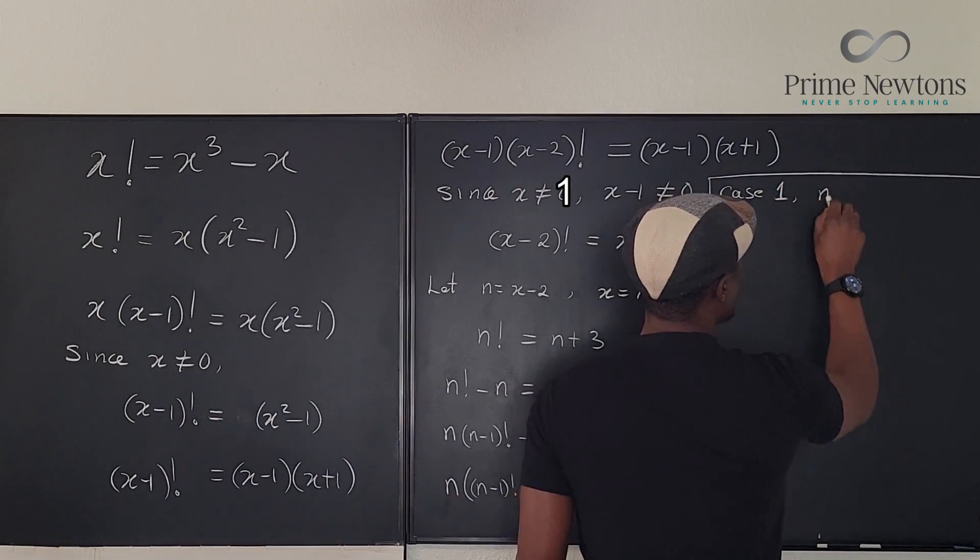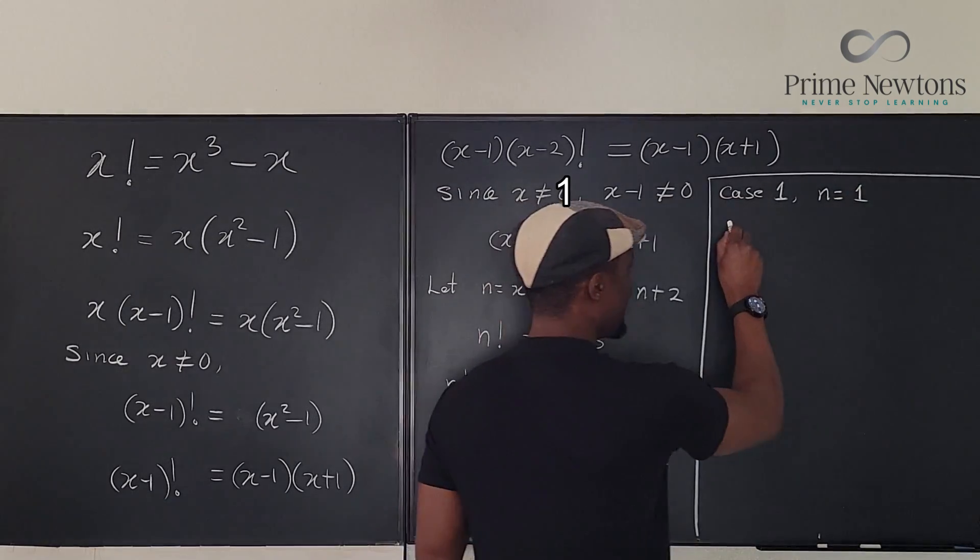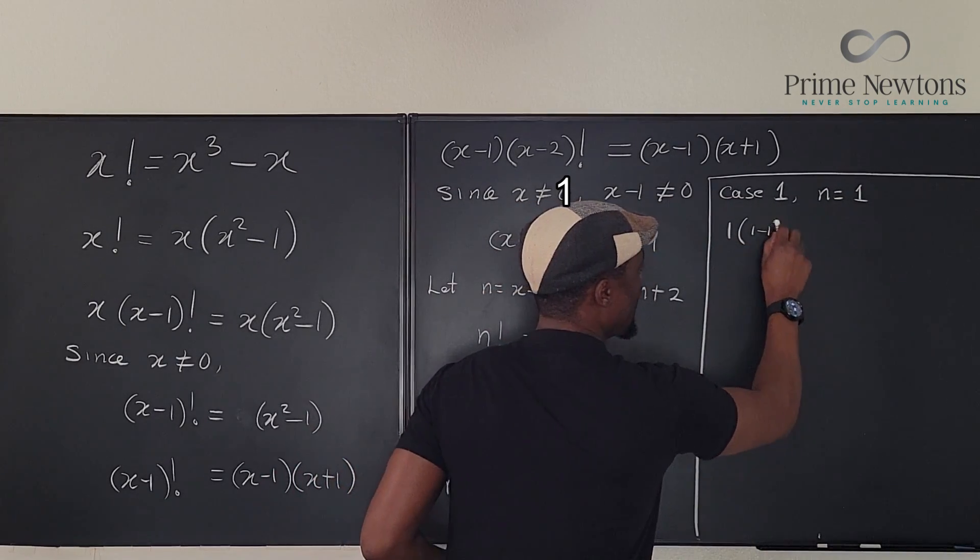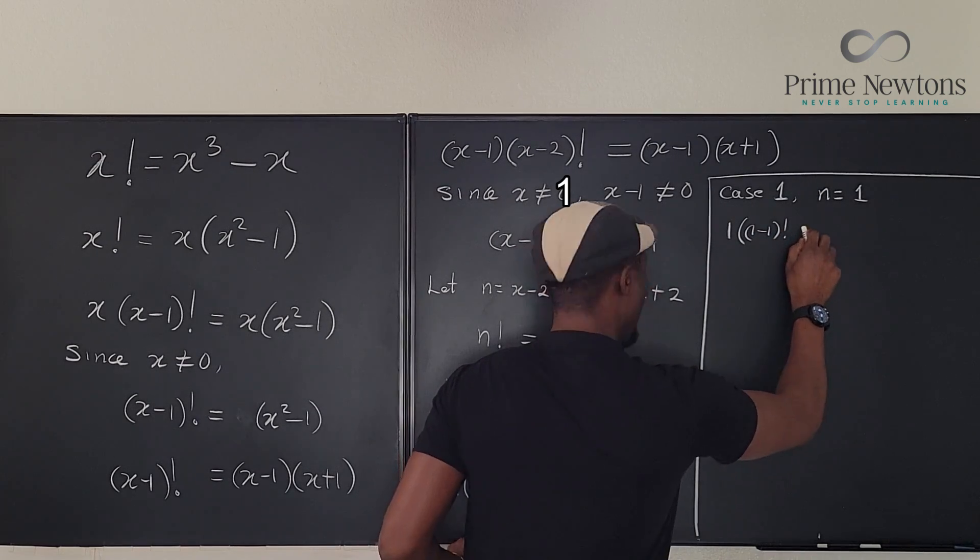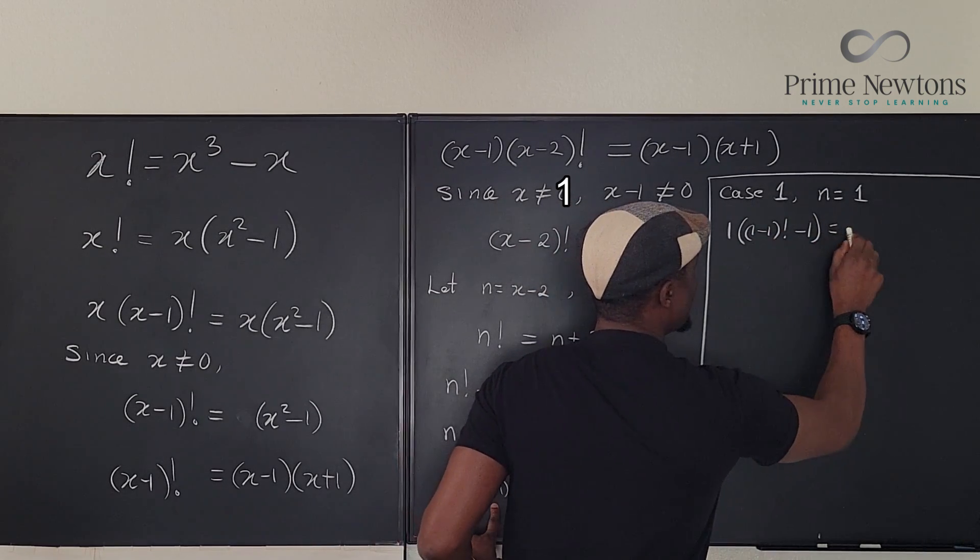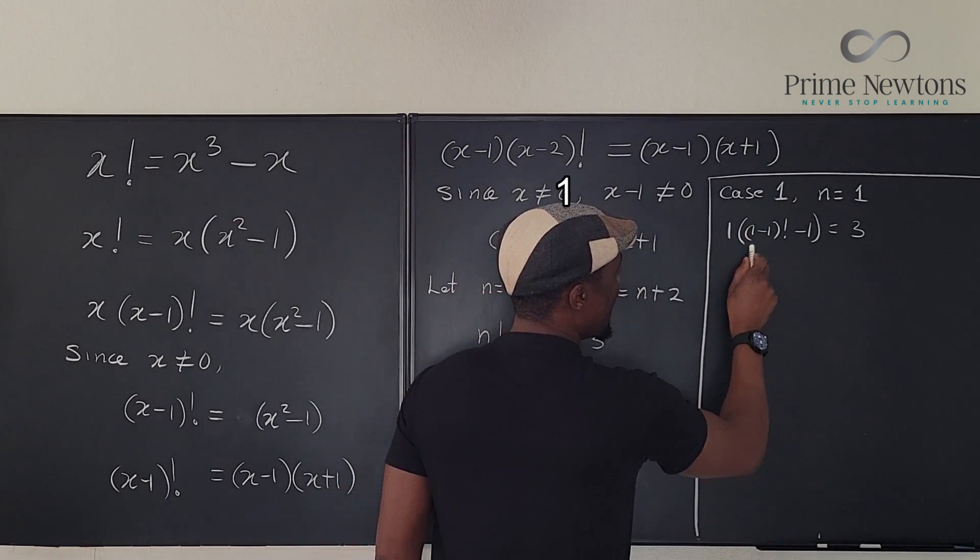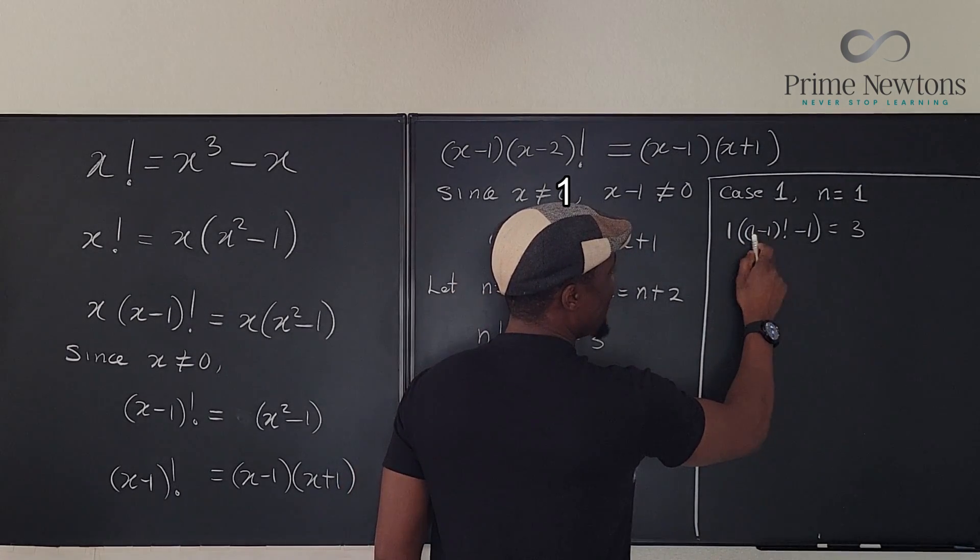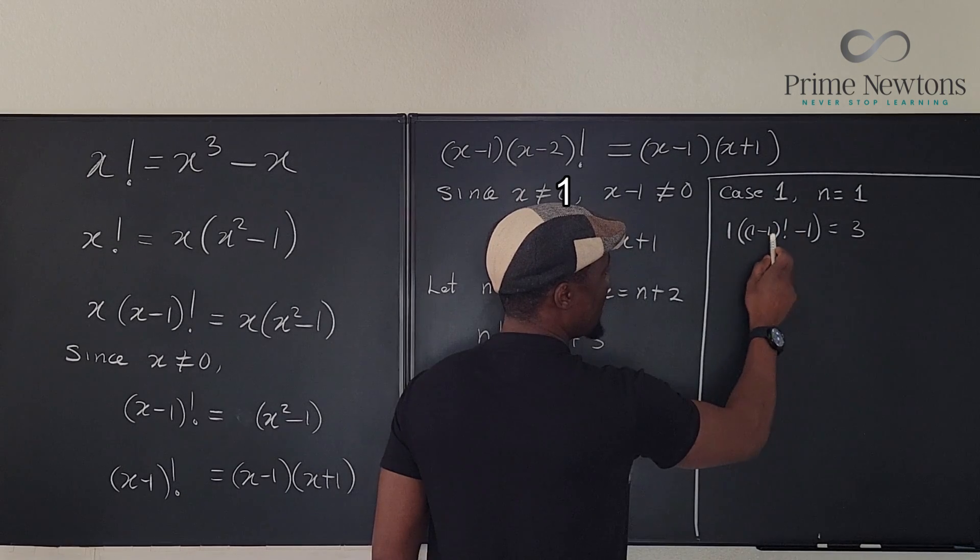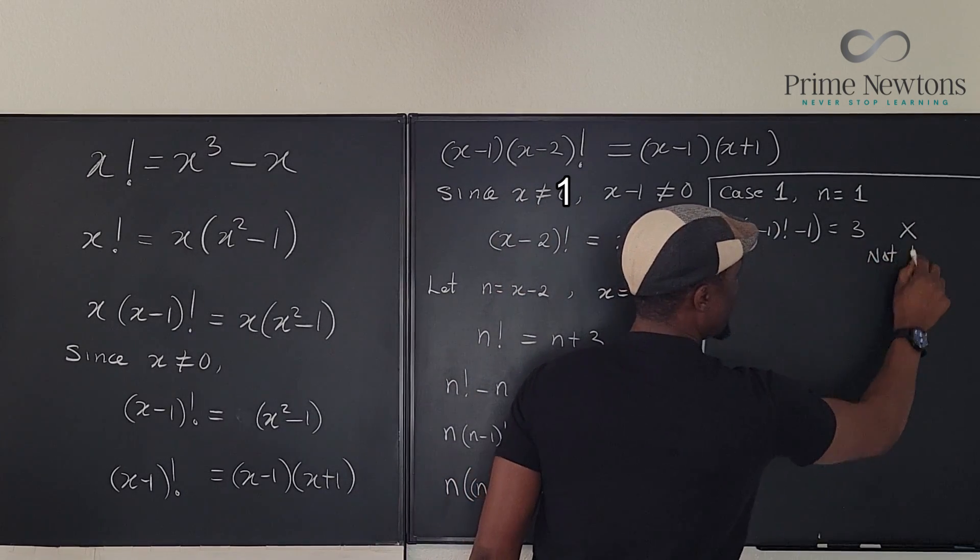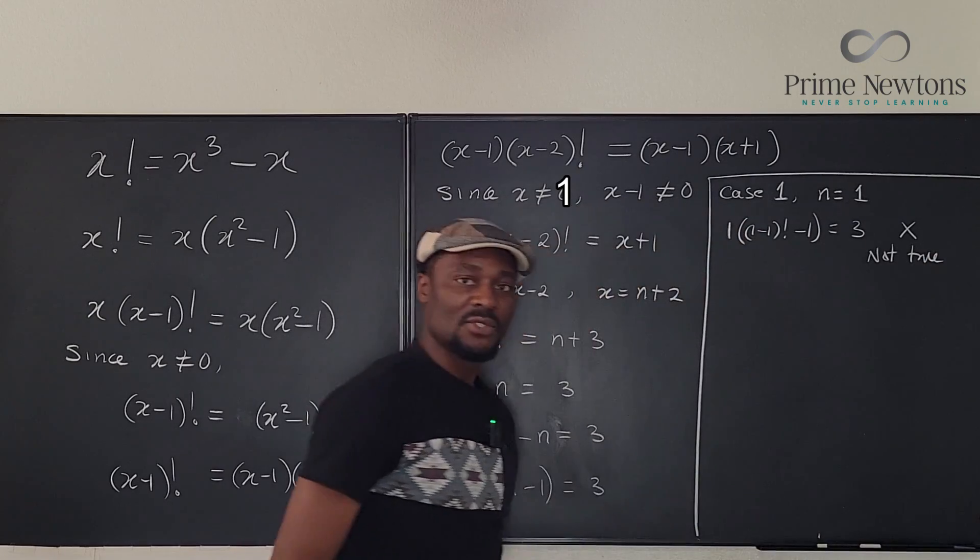Case 1, n is equal to 1. 1 times 1 minus 1 factorial minus 1 is equal to 3. That's going to be 1 minus 1 is 0. 0 factorial is 1 minus 1 is 0. This is not true. Not true. So that's not true.